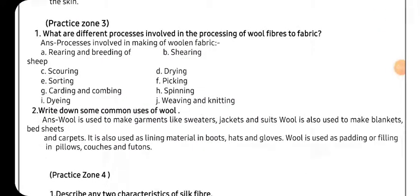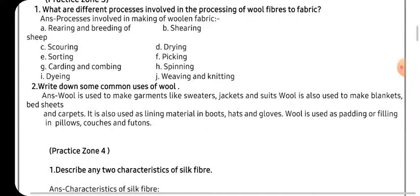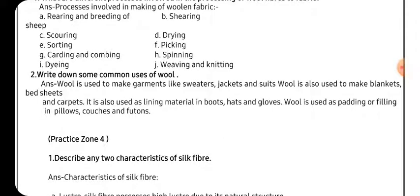What are the different isoprocesses that are involved in processing of wool? First is rearing and breeding. After that, cutting of the wool, that is shearing.